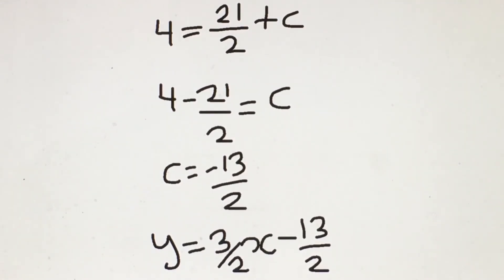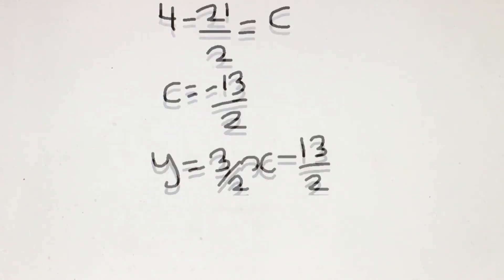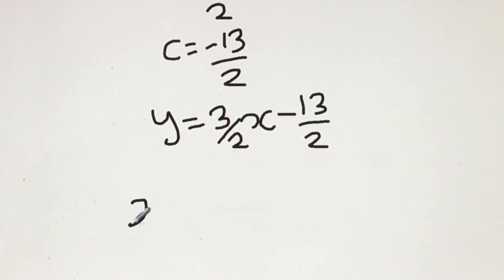Now how do I eliminate the 2 at the denominator? I'm going to multiply by its reciprocal from both sides. So we're left with 2y equals 3x minus 13.